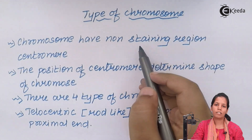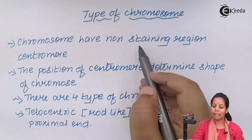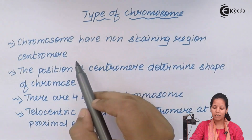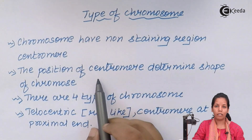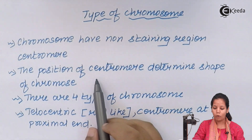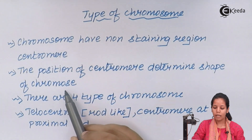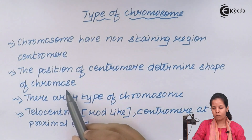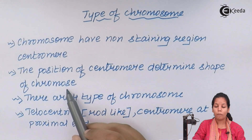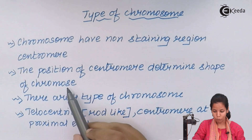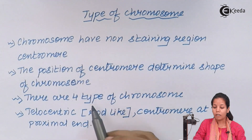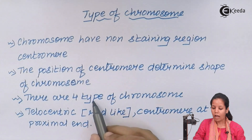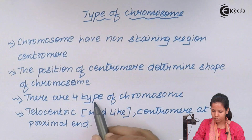Chromosomes have a non-staining region, and this non-staining region is basically your centromere. The position of the centromere determines the shape of the chromosome. Depending on that, chromosomes are of four different types.